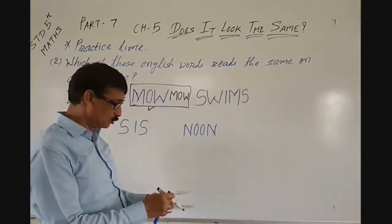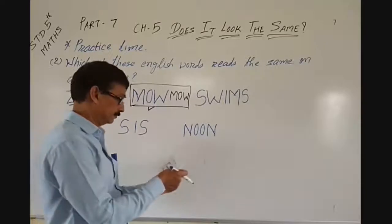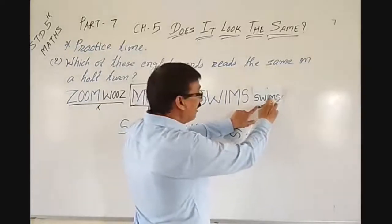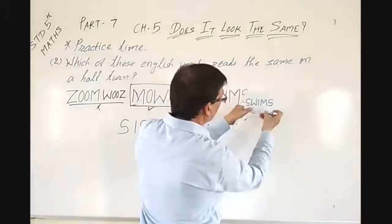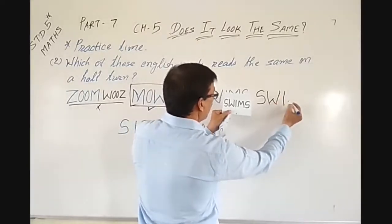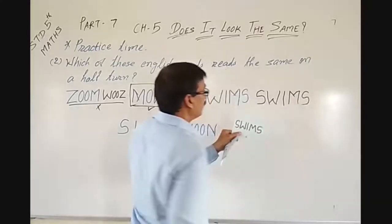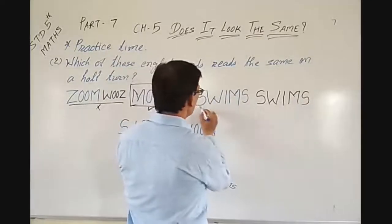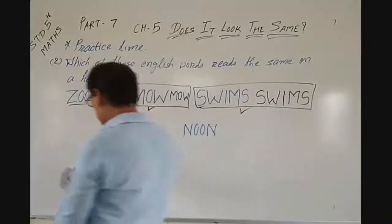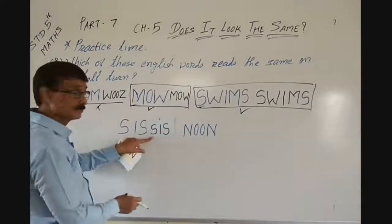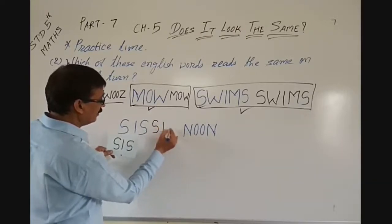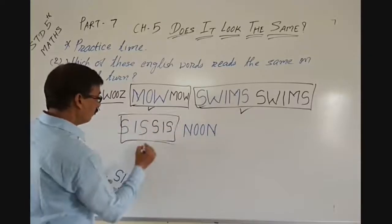Let's go for this one — S-W-I-M-S. Now let me give it a half turn. On giving half turn, it looks like S-W-I-M-S. Both look the same. Then, S-S — let's give half turn to S-S. On giving half turn, it will look like this. This also looks the same.